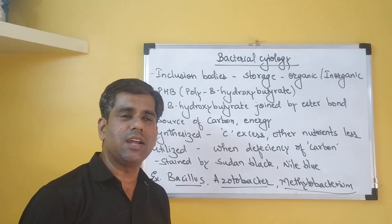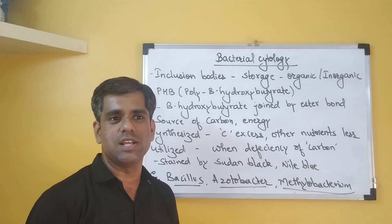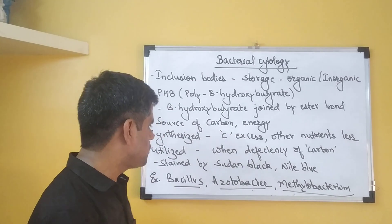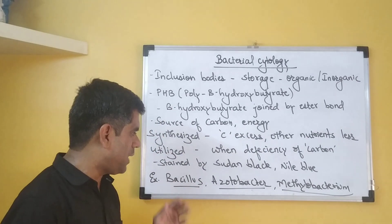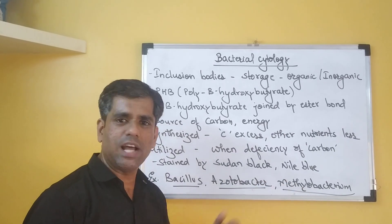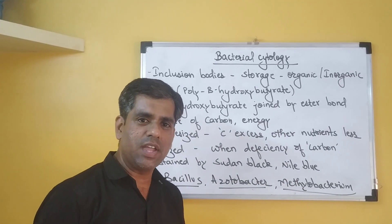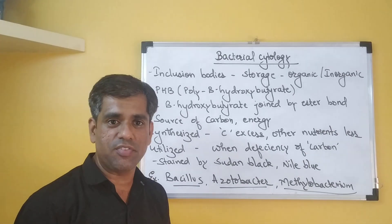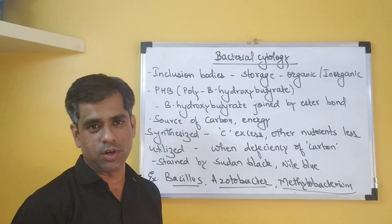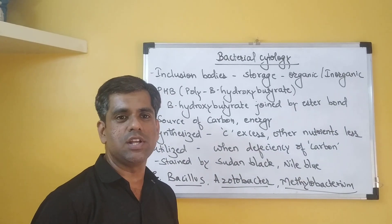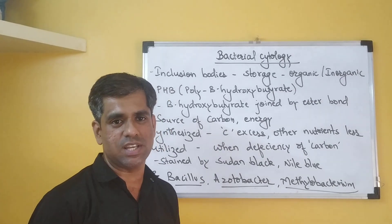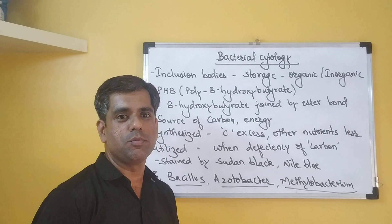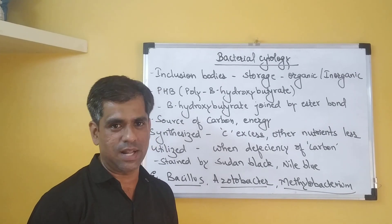PHB falls under the more general term polyhydroxyalkanoate, that is PHA. Some bacterial species which have PHBs include Bacillus, Acetobacter, and Methylobacterium. As mentioned, the species and their nutritional status define the presence of these inclusion bodies. Presently, PHBs and PHAs in general are discussed more because of their use in the formation of biodegradable plastics.